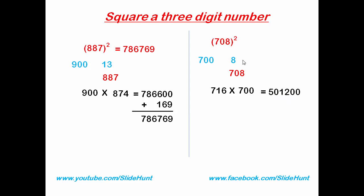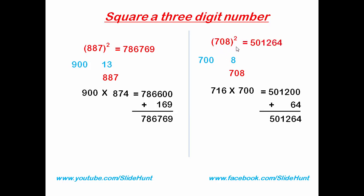Now square 8. Eight squared is 64. Add that with 501200 and the result is 501264. So the square of 708 is 501264.